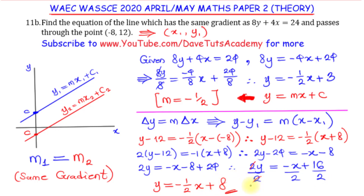We have successfully solved the question. Looking at both equations, the first line has slope minus half and intercept 3, while the second line has slope minus half and intercept 8. Only the intercept changes, confirming they are parallel. The correct solution is y equals minus half x plus 8.